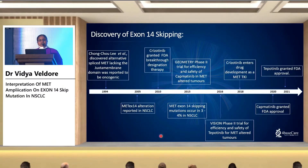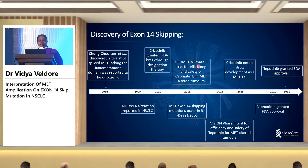The evolution of MET exon 14 skipping, and MET alterations broadly, started with the discovery in 1994. Slowly, different preclinical and clinical studies emerged where people started using MET-specific inhibitors. The GEOMETRY phase 2 trial was one of the landmark trials where capmatinib was used, followed by the VISION phase 2 trial. We recently got approval for capmatinib and tepotinib in MET exon 14 skipping, and it's already part of the NCCN guidelines.